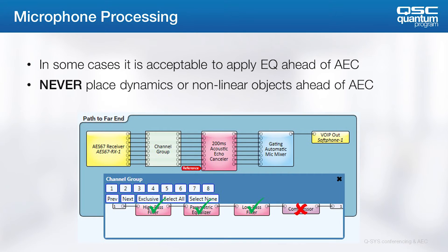There's one case where it is acceptable to apply some processing ahead of the AEC block. When multi-microphone beam-forming arrays are being used, such as the Shure MX-A910, it's desirable to follow the published guidelines for EQ ahead of the AEC to remove excess low-frequency energy. This can often be done in the microphone processing itself, but can also be done in the Q-SYS environment, as shown. Even in this case, we never place microphone dynamic objects, linear or non-linear, before the AEC block.